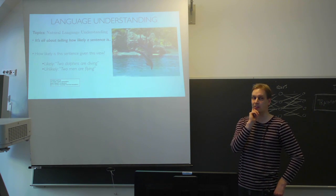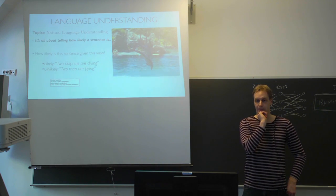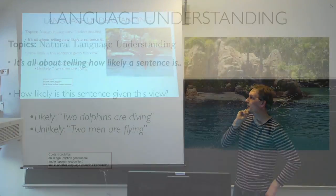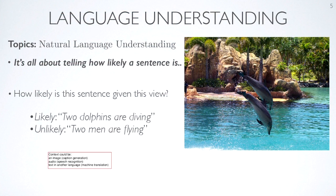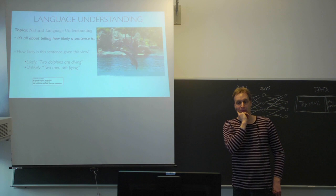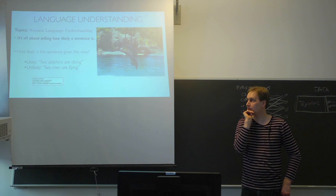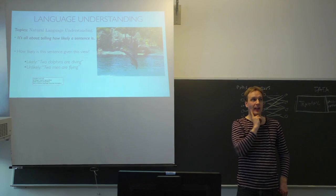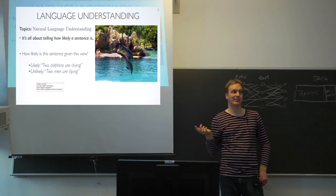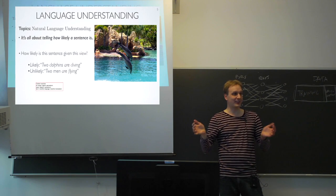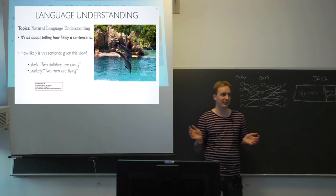We have the caption generation example where we have a context in a visual form and now the sentence that two dolphins are diving is likely and two men are flying is unlikely. You could have a language model without any context. So you just ask is this a likely sentence in this language in general.